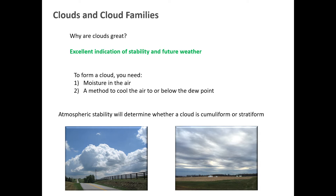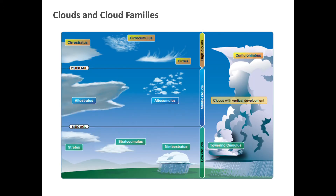Beyond moisture and dew point, the stability of the atmosphere - how quickly the air currents are moving vertically, the density of the air, the temperature lapse rate - will determine what type of cloud is formed. Once you have moisture condensed, atmospheric stability determines what type of cloud you're going to get.